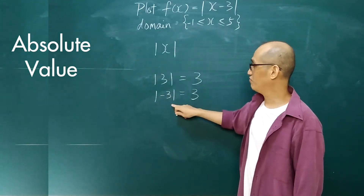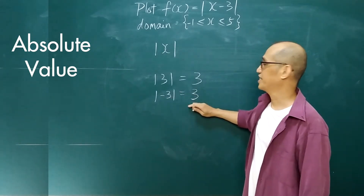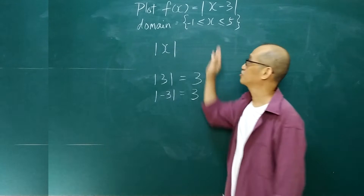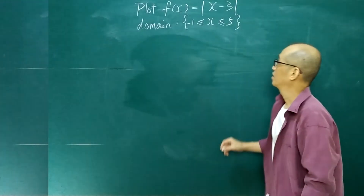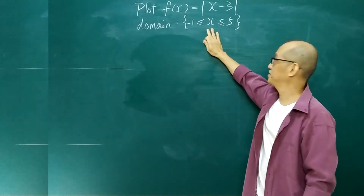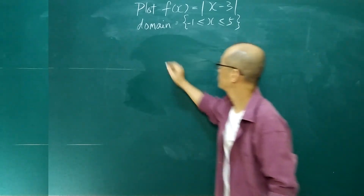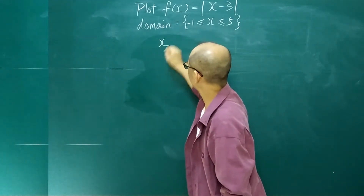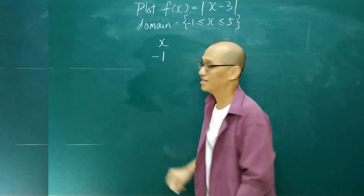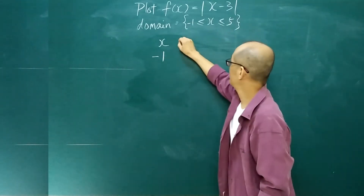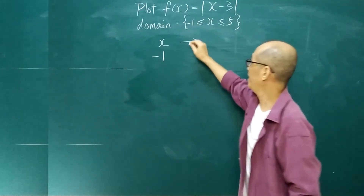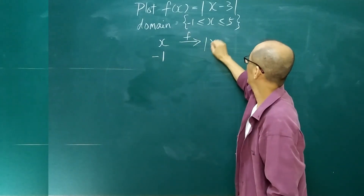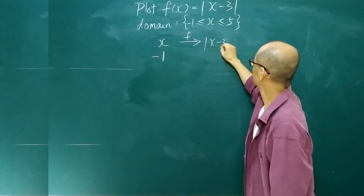For absolute value, we don't want the negative sign — we only take the absolute value, which is 3. Now let's try this one. The domain is negative 1, 2, 5. The object here is x, and we start with negative 1. We go through the function f and we get the absolute value of x minus 3.